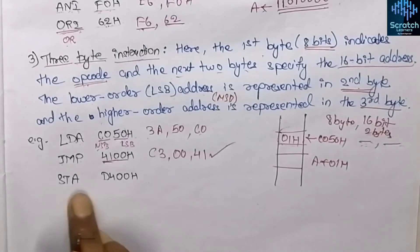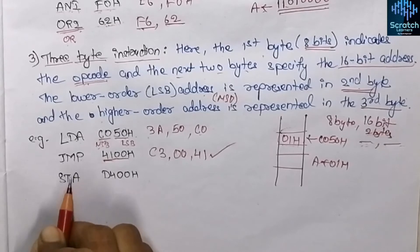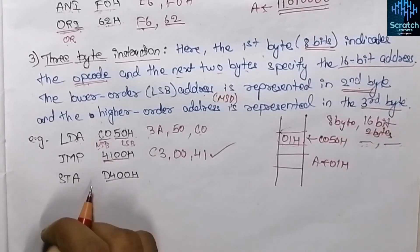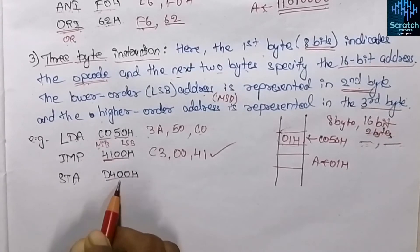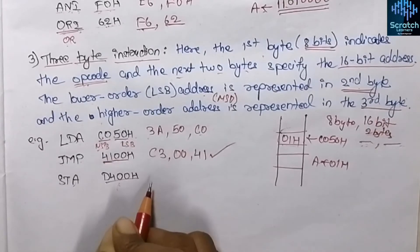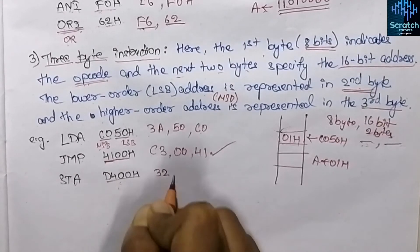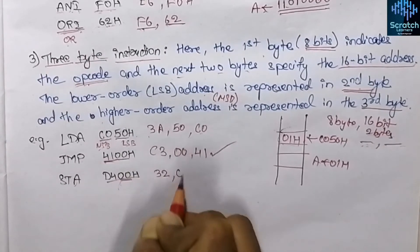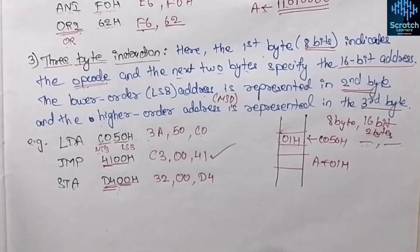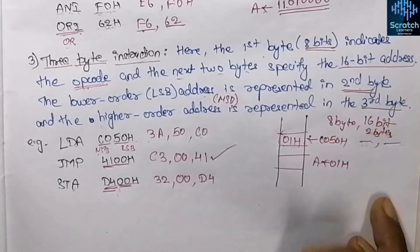The last example is STA instruction, used to store the content of the accumulator into a memory location. Whatever 8-bit data is present in the accumulator will be stored at address D400 hex. The first byte is occupied by the opcode which is 32 hex, the second byte is the LSB which is 00 hex, and the third byte is the MSB which is D4 hex.